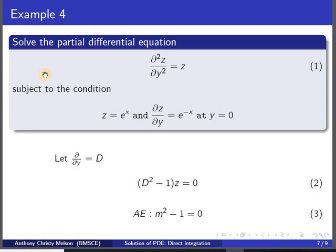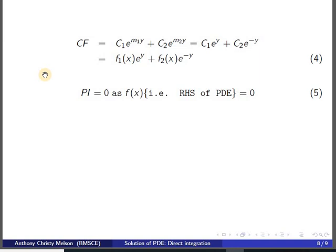The auxiliary equation is m² - 1 = 0, whose roots are m = 1 and m = -1. Therefore the complementary function is c₁e^y + c₂e^(-y). Since we are dealing with the solution of a PDE by direct integration, the constants in the complementary function can be treated as functions of x, because D was chosen as ∂/∂y. So we replace c₁ with f₁(x) and c₂ with f₂(x). The particular integral is 0, giving z(x, y) = f₁(x)e^y + f₂(x)e^(-y).